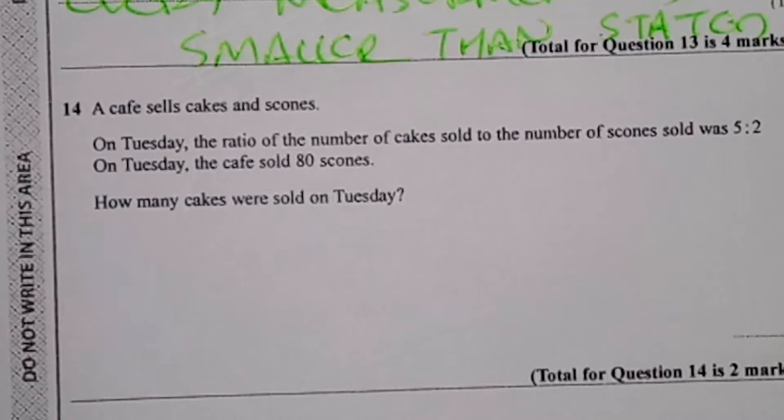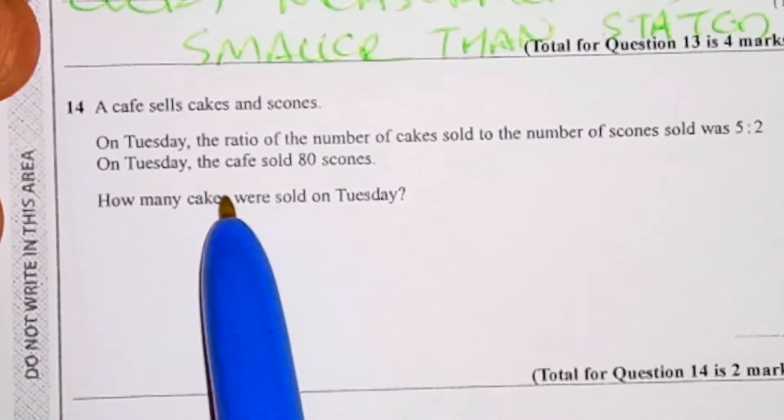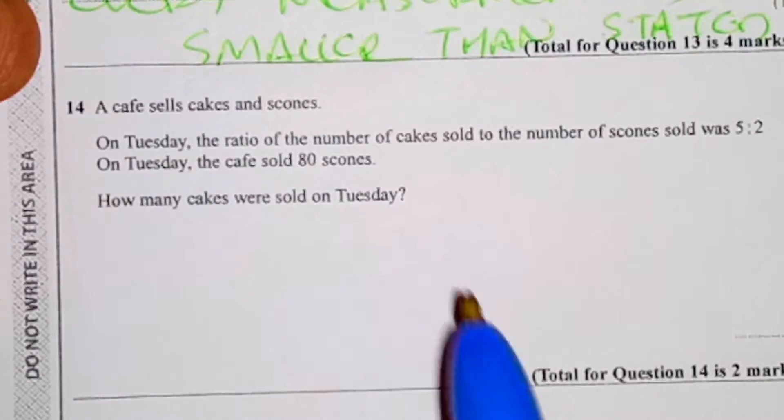So it was cakes and scones. On Tuesday the ratio of number of cakes sold to number of scones was 5 to 2. On Tuesday the cafe sold 80 scones. How many cakes were sold in total?